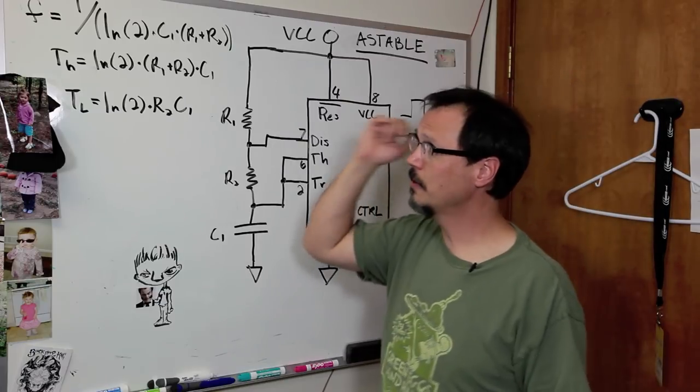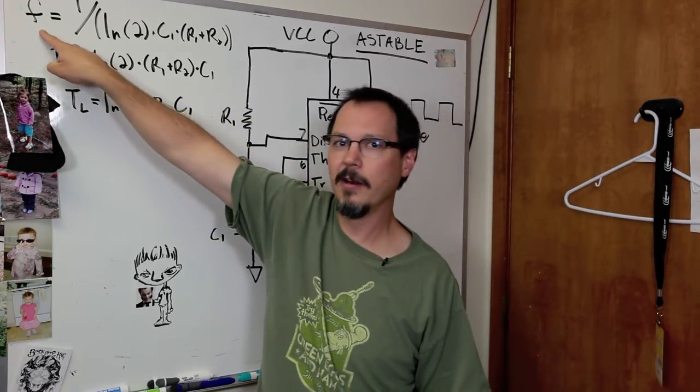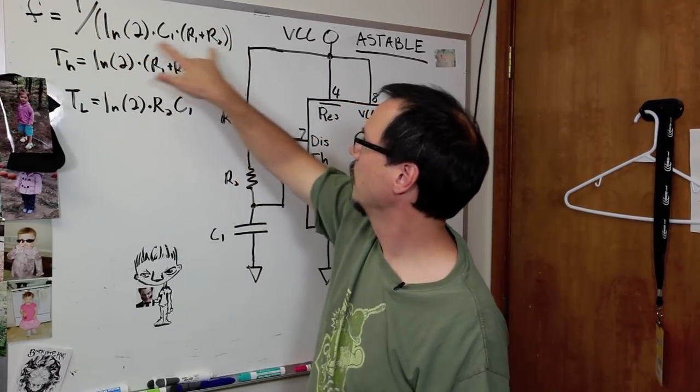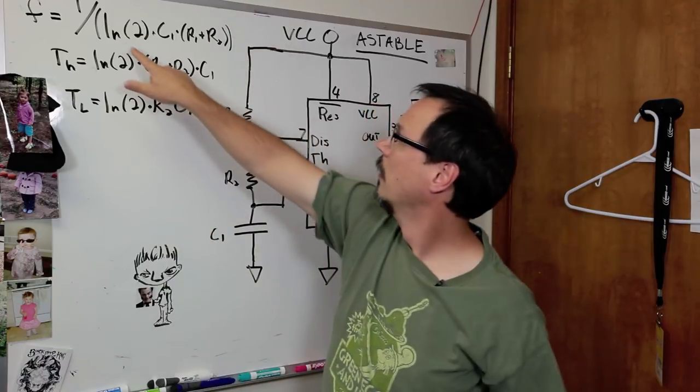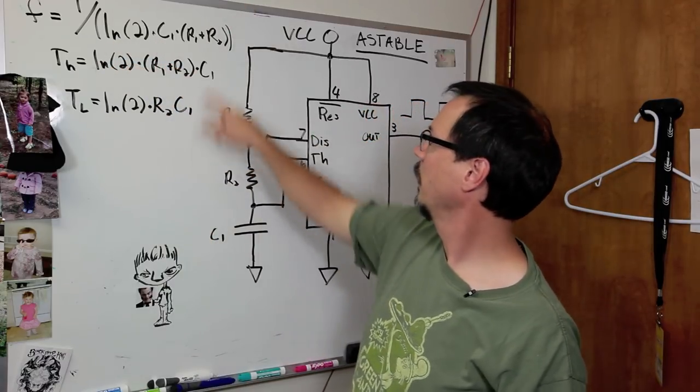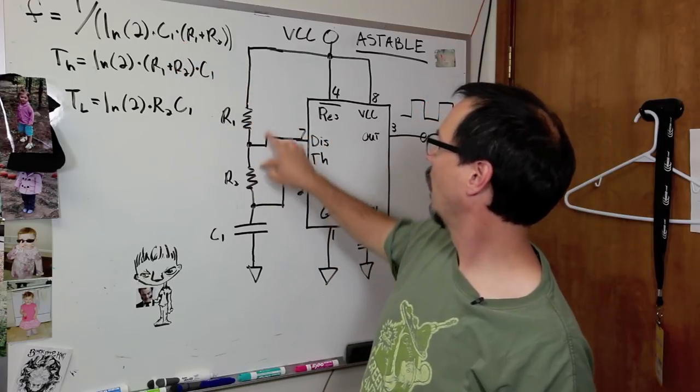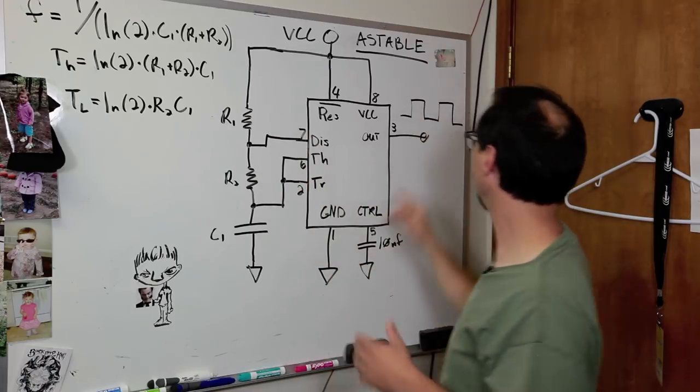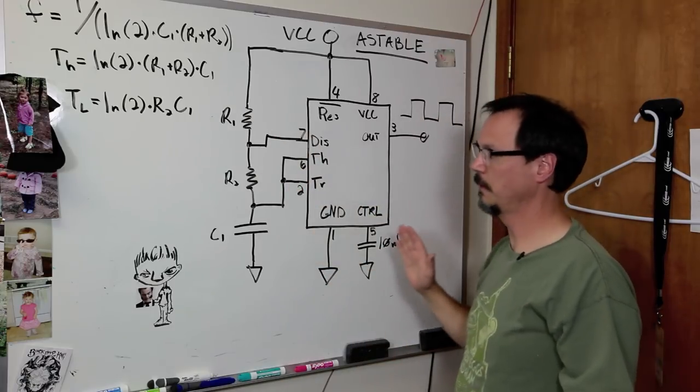So when you're calculating the frequency of this guy, F, right, one over the quantity, and if you count your parentheses, this is all one quantity, natural log of two times C1 times R1 plus R2, all right? That will give you your frequency out. Fair enough.